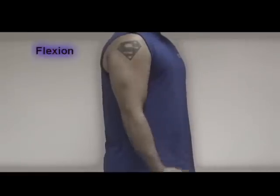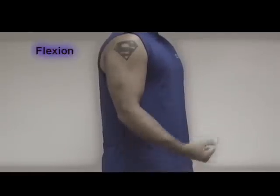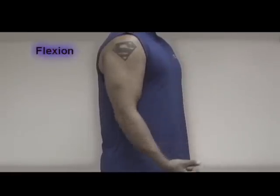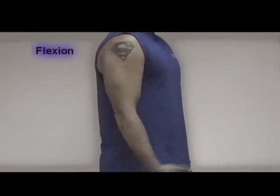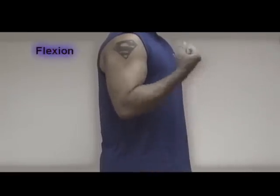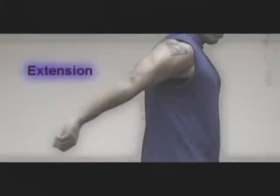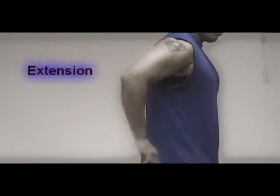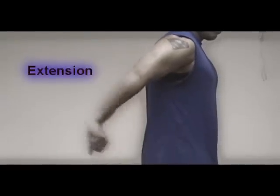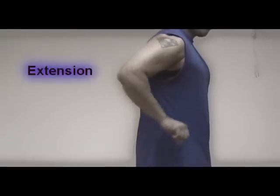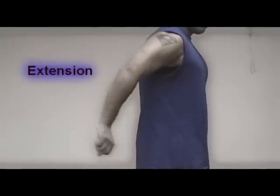Flexion: Movement resulting in a decrease of the joint angle, usually moving anterior in the sagittal plane. Extension: Movement resulting in an increase of the joint angle, usually moving posterior in the sagittal plane.